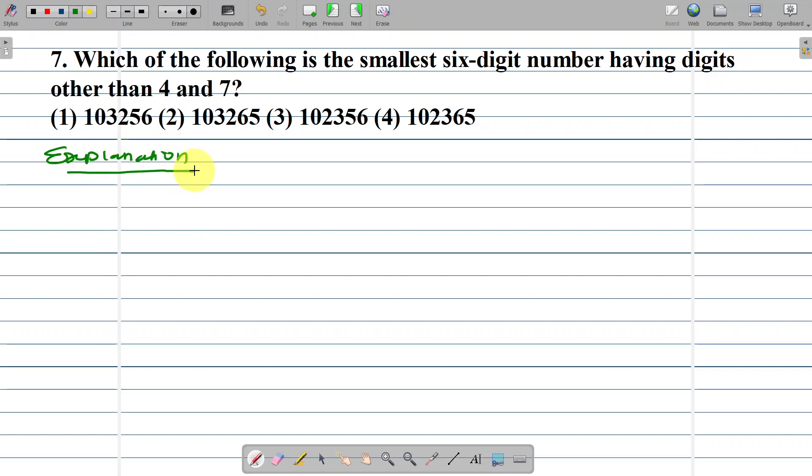For 6-digit numbers other than 4 and 7, the available digits are 0, 1, 2, 3, 5, and 6. These are the digits less than 7 and not equal to 4. So you can choose from these numbers.